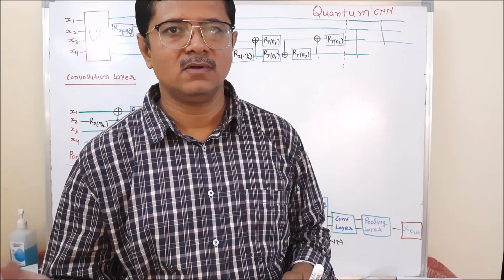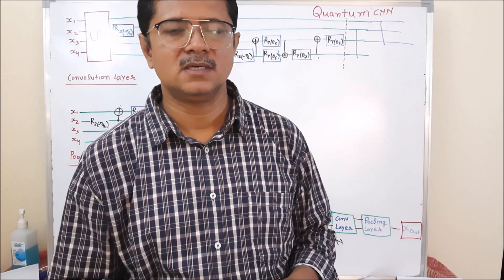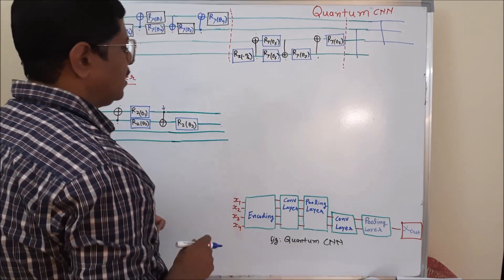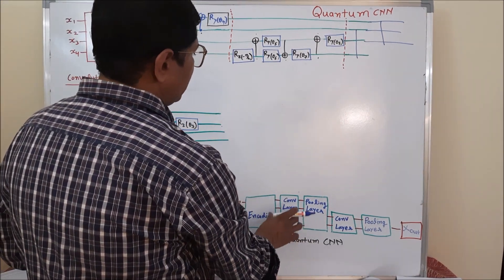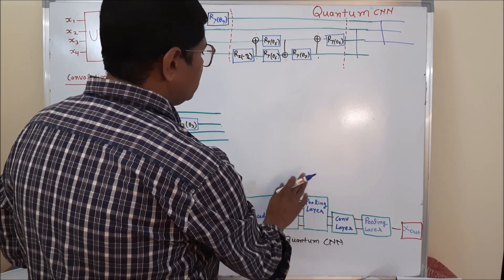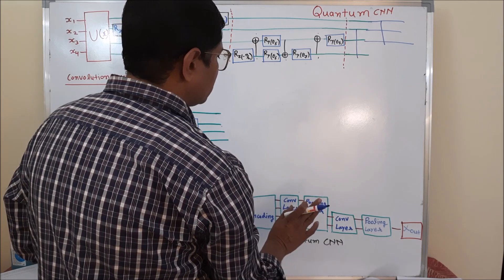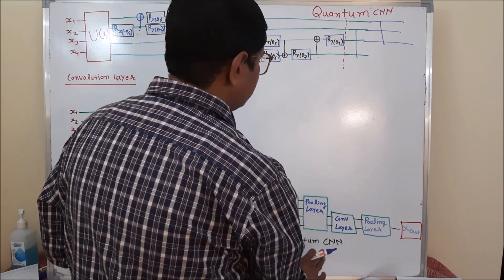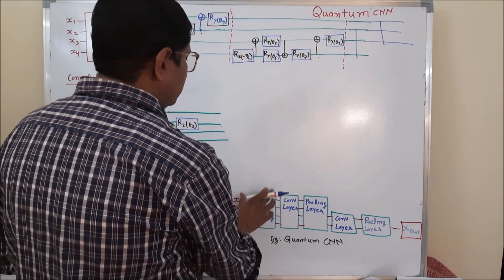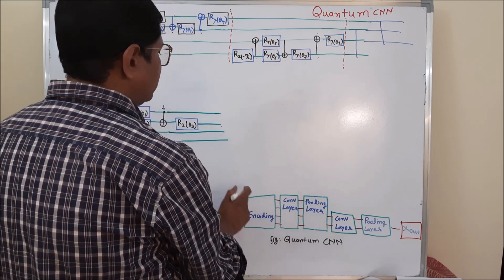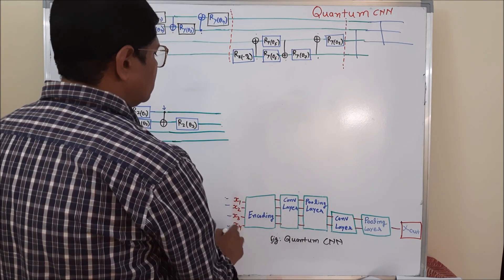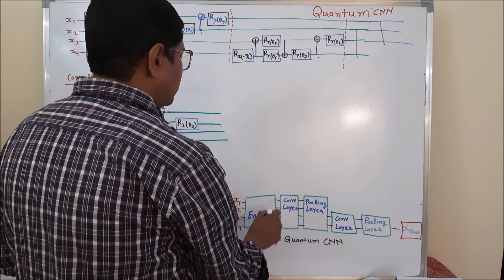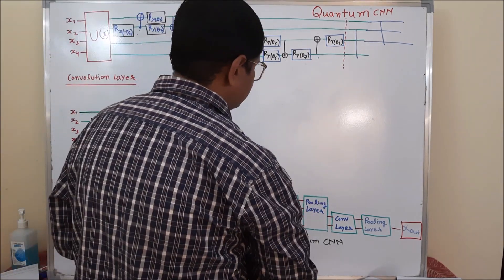So either you can go and follow some textbook and read those things, or you can watch the previous tutorials. In this tutorial, I will explain what is the convolution layer in the context of quantum CNN, what is the pooling layer in the context of quantum CNN, and how it works. In the previous tutorial, I already explained how we can take some external data, encode the data so that we can use it in a quantum system, meaning a quantum circuit or deep learning circuit.